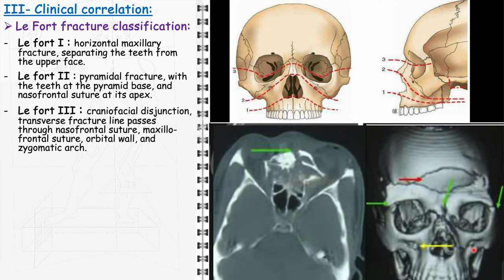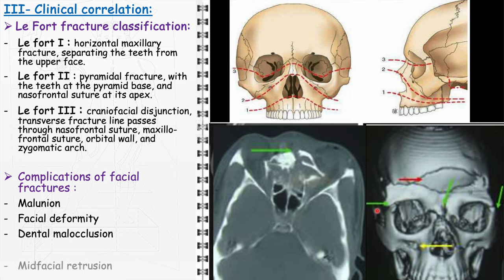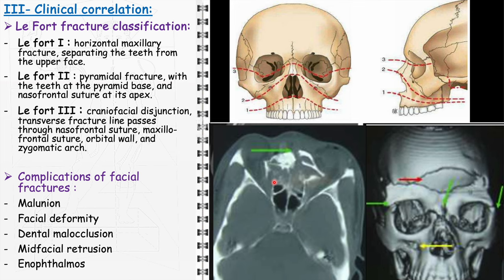The LeFort III fracture, also known as craniofacial disjunction, is a severe form of facial injury. The transverse fracture line passes through the nasofrontal suture, maxillofrontal suture, orbital walls, and zygomatic arch, essentially separating the facial skeleton from the cranial base. Clinically, it presents with massive facial swelling, bilateral raccoon eyes, and possible CSF rhinorrhea. Complications arising from facial fractures can include malunion, leading to misaligned bone healing; facial deformity, affecting aesthetic appearance and function; dental malocclusion, resulting in a misaligned bite; mid-facial retrusion, where the middle portion of the face is set back; and enophthalmos, a condition where the eye appears sunken due to changes in orbital volume or structure.